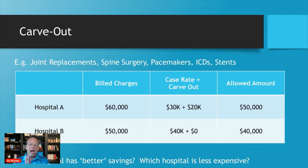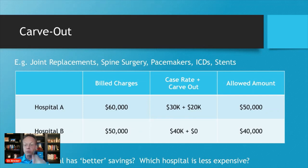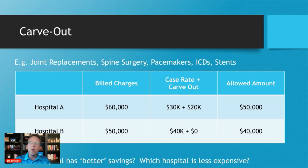So at which hospital do you have better savings? You would think hospital A, because it only has a case rate of $30,000 versus hospital B's $40,000 case rate. But if you don't look at the carve-out aspect of that contract, you will completely miss the fact that hospital A is more expensive than hospital B because of the contract. That's why you'll look at joint replacements and see that at some hospitals a total knee or total hip is only $25,000, and at another place it's $75,000 — a big leap between facilities.